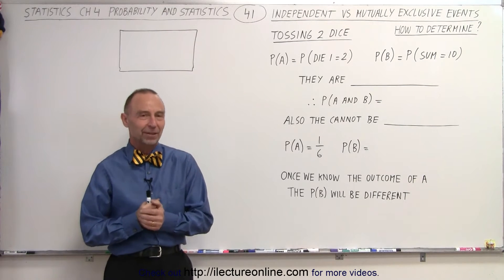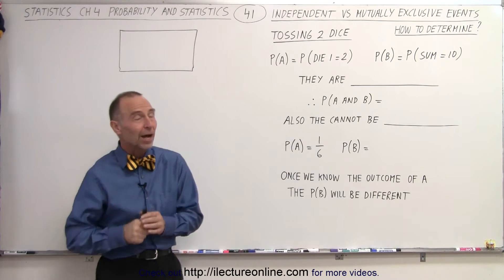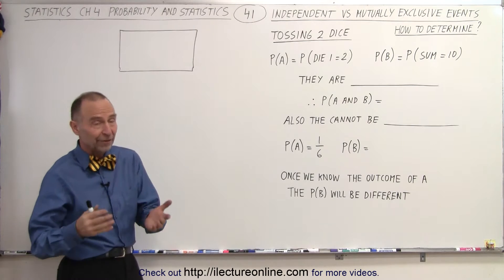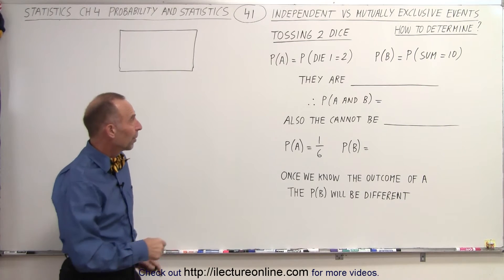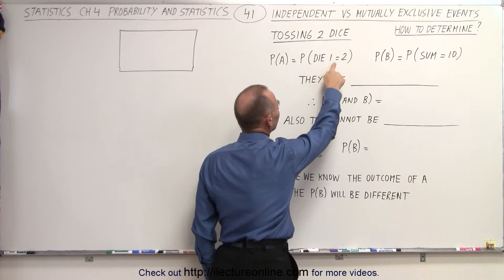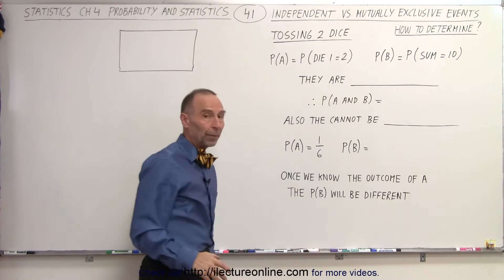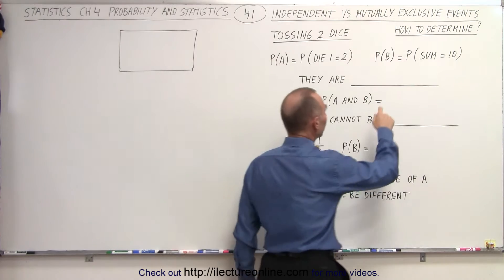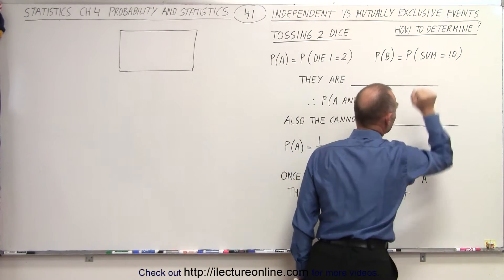Welcome to Y Lecture Online. In our next example, we're tossing two dice. We have two events, two probabilities. The probability that A will occur is equal to the probability that die 1 equals 2. The probability of B is equal to the probability that the sum of the two dice equals 10.